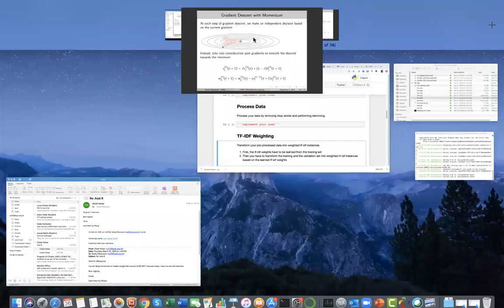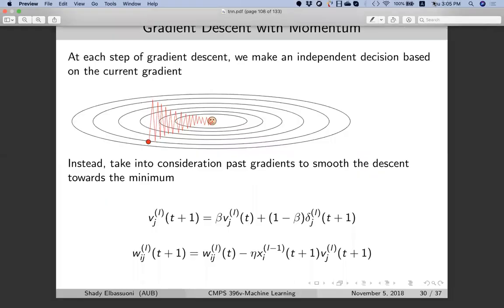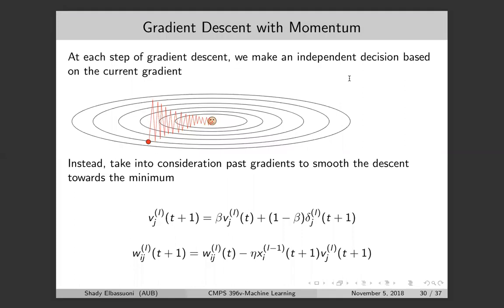It's like throwing a ball — you don't want the ball to keep jumping, you want it to go in a smooth direction towards the minimum. So this is how gradient descent with momentum works: instead of updating the weights based on the gradient delta j of l, you update it based on v_j.